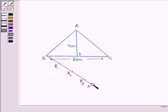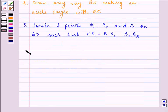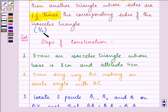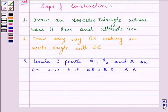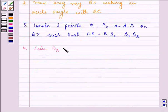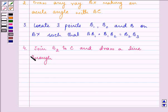Now what we need to do is we need to join B2 to C. Let me write it down also. Now the fourth step is to join B2, that is the second point, as 2 is smaller in 3 by 2, right? So we will join B2 to C and draw a line through B3 parallel to B2C.